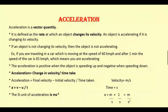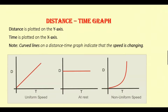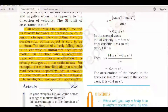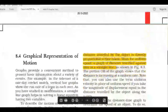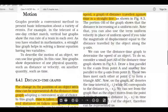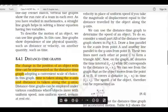Our next topic is about graphs. There are two graphs we are going to discuss in this lesson. First is the distance-time graph. In a distance-time graph, the distance is always plotted on the y-axis and the time is always plotted on the x-axis, as shown in your textbook under graphical representation of motion.